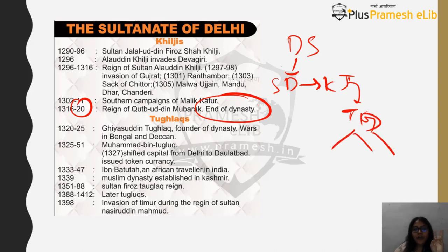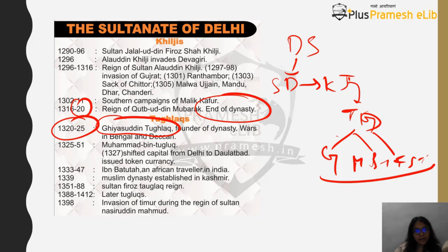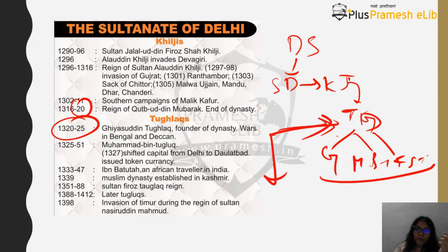In the Tughlaq dynasty you have three rulers: Ghiyasuddin Tughlaq, Mohammed bin Tughlaq, and Firuz Tughlaq. In 1320, for about five years, Ghiyasuddin Tughlaq, the founder of the Tughlaq dynasty, started the empire and went to wars on both the Deccan side and the Bengal side.